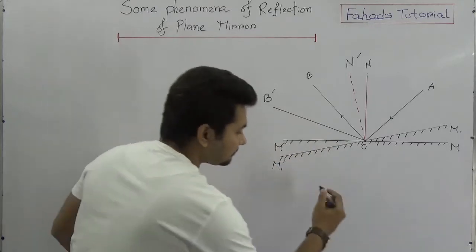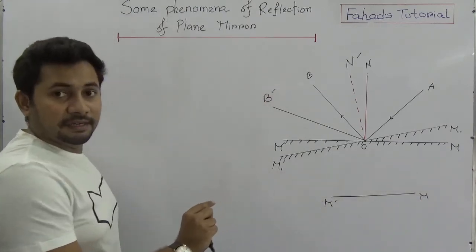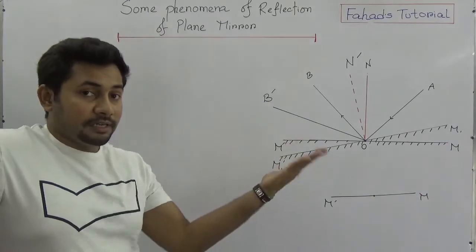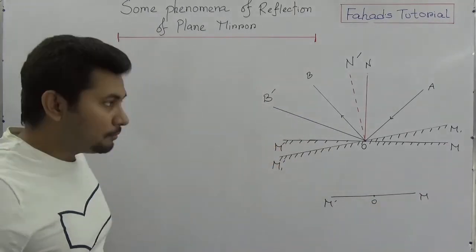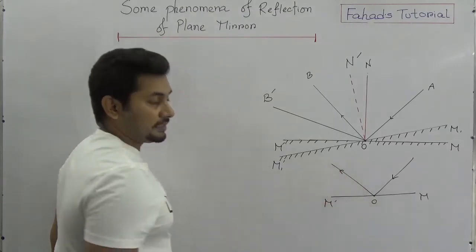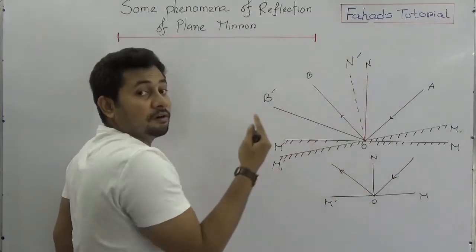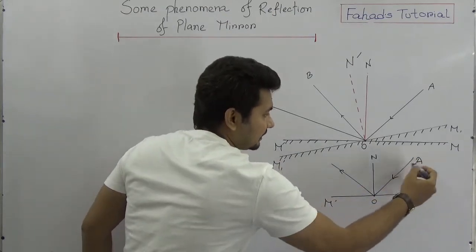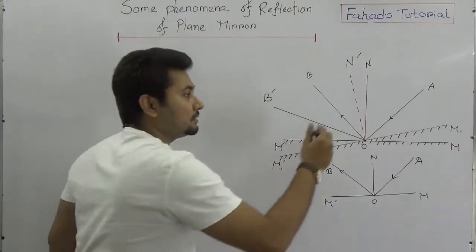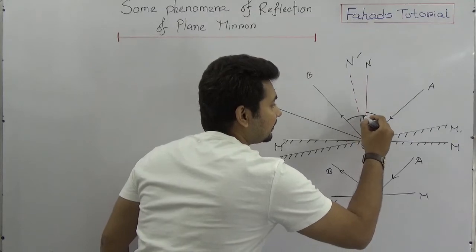Suppose the previous setup. This is the previous one: M and M prime. M and M prime is the mirror, and this mirror can rotate about the point O. So, AO was the incident ray and OB was the reflected ray. OM was the normal upon the mirror at point O. So N is the normal. We can say that angle AN and angle BN are the same.